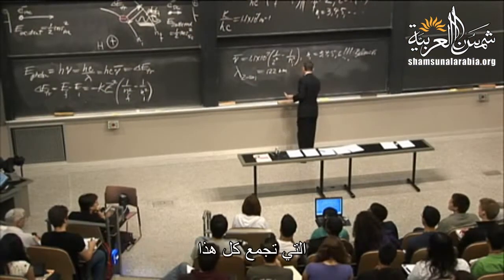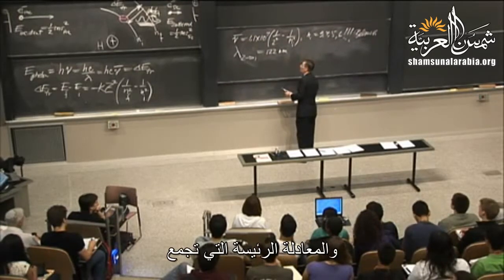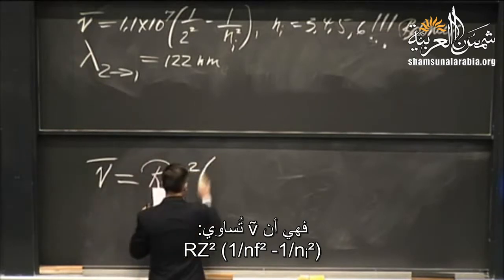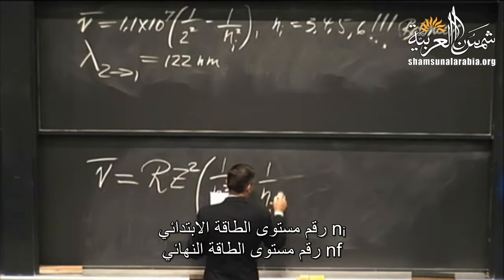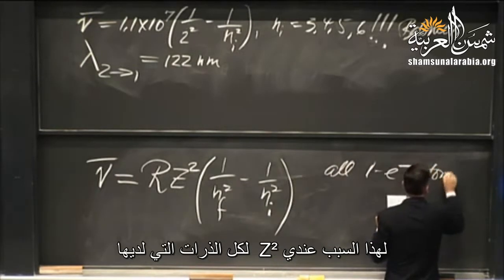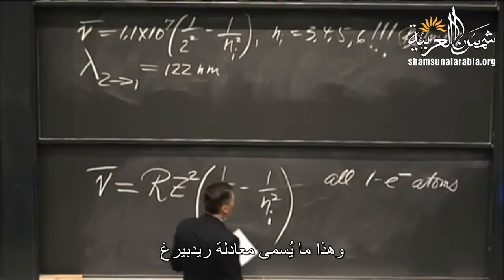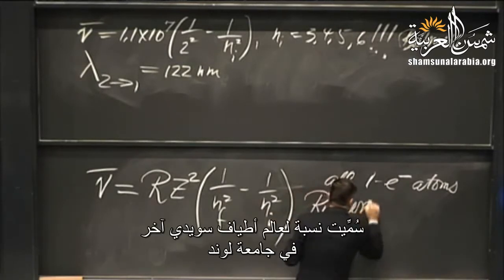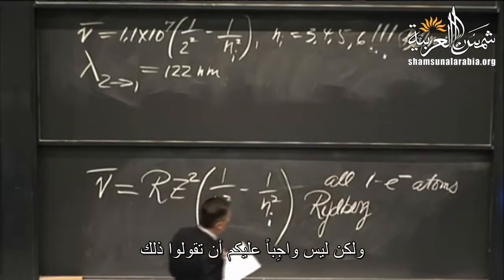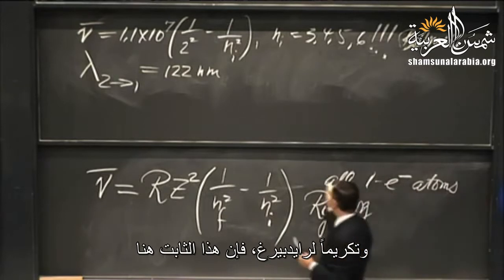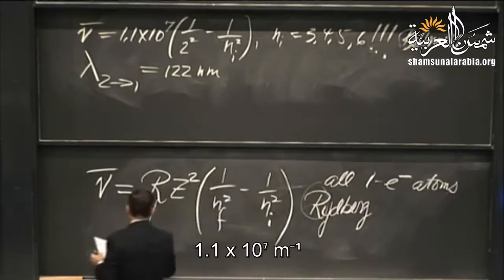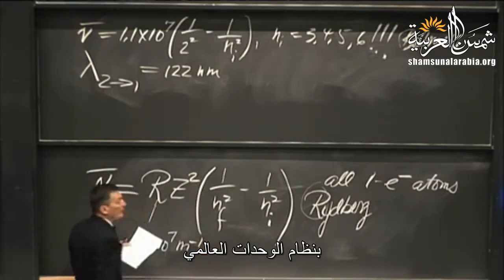The master equation that captures all of this is the Rydberg equation: nu-bar equals R times z squared times (1 over n_f squared minus 1 over n_i squared). This is the most general form for all one-electron atoms — that's why there's a z squared. It's named after Rydberg, a Swedish spectroscopist at the University of Lund. The Rydberg constant R has a value of 1.1 times 10 to the 7th reciprocal meters.